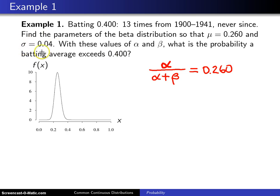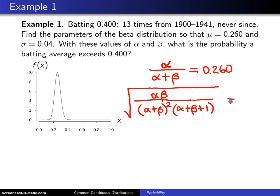Second of all, what is the standard deviation of a beta random variable? Well, the variance is alpha times beta divided by alpha plus beta squared times alpha plus beta plus one. If that is the population variance, then the square root of that will be the population standard deviation, and we set that equal to 0.04 to match this.